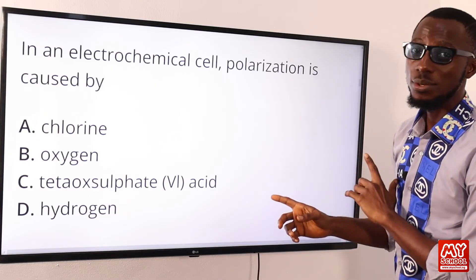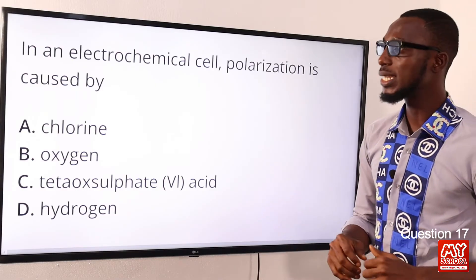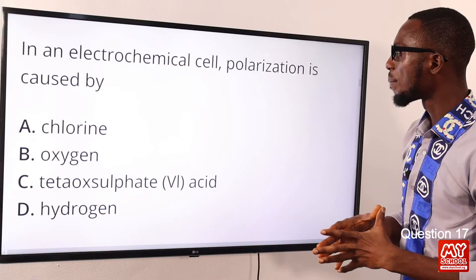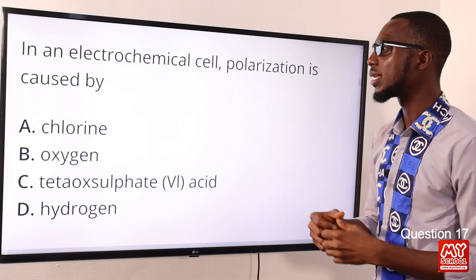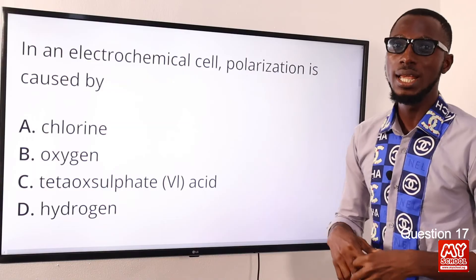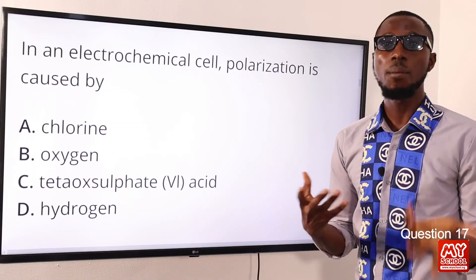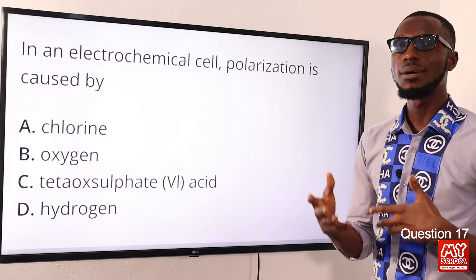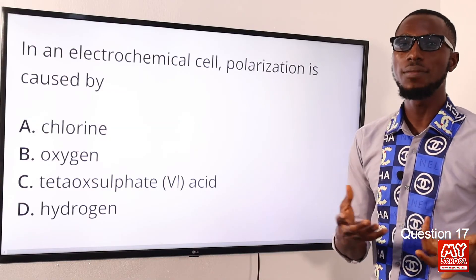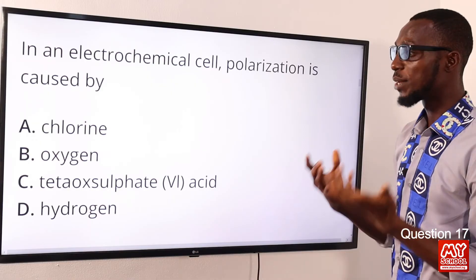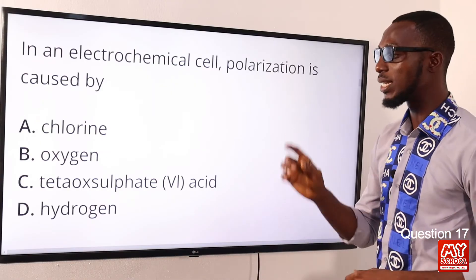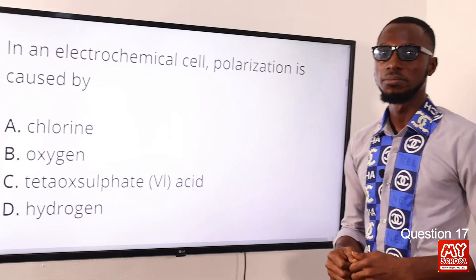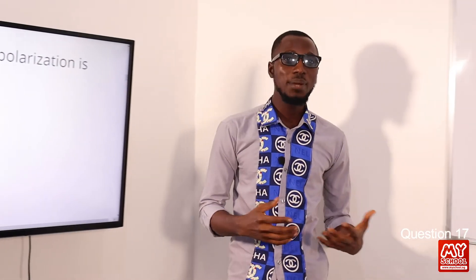Question seventeen: in an electrochemical cell, polarization is caused by what? Polarization describes the formation of hydrogen gas bubbles around the copper plates of a simple cell. So the correct option is option D for hydrogen.